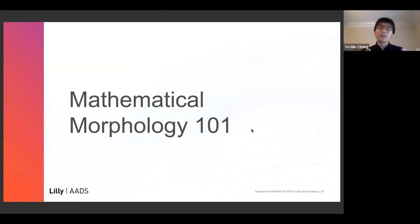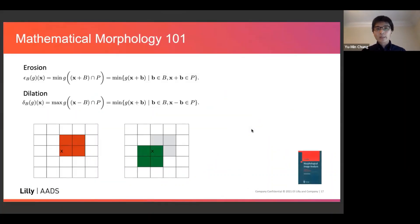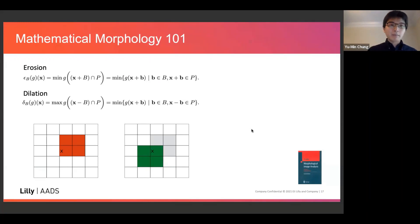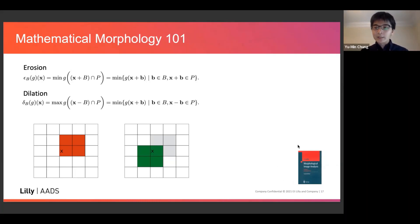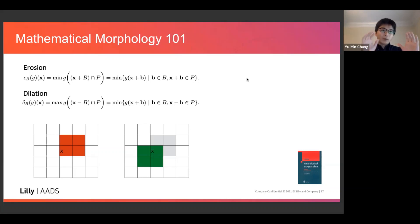That's why we introduce the tool called mathematical morphology, a classic tool in image processing. Any image processing textbook has a chapter on mathematical morphology. It's a beautiful mathematics — everything comes down to set theory, with beautiful operations built on that theory. Let me give you about five slides on what mathematical morphology is.